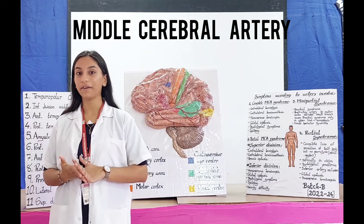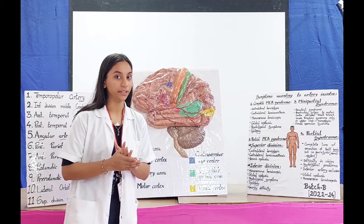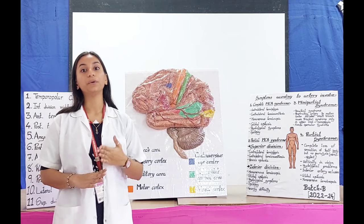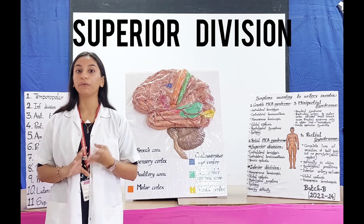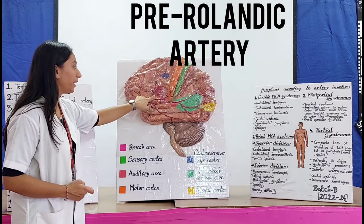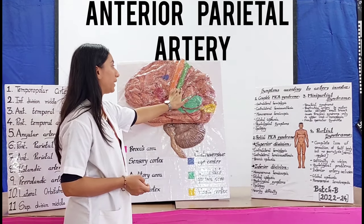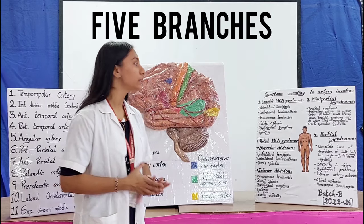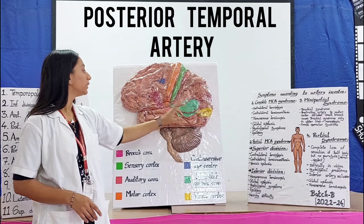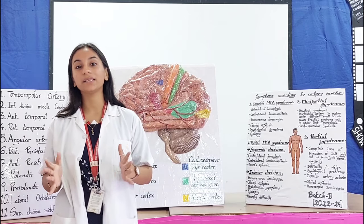Now let's discuss about the middle cerebral artery, its branches, and origin. The middle cerebral artery is the largest and direct branch of the internal carotid artery. It runs in the lateral sulcus, which lies between the frontal and temporal lobe. It is further bifurcated into the superior division and inferior division. The superior division has four branches: the lateral orbitofrontal artery, the pre-rolandic artery, the rolandic artery — which runs between the sensory and motor cortex — and the anterior parietal artery. The inferior division has five branches: the posterior parietal artery, the posterior temporal artery, the anterior temporal artery, and the temporopolar artery, which ends at the temporal lobe.